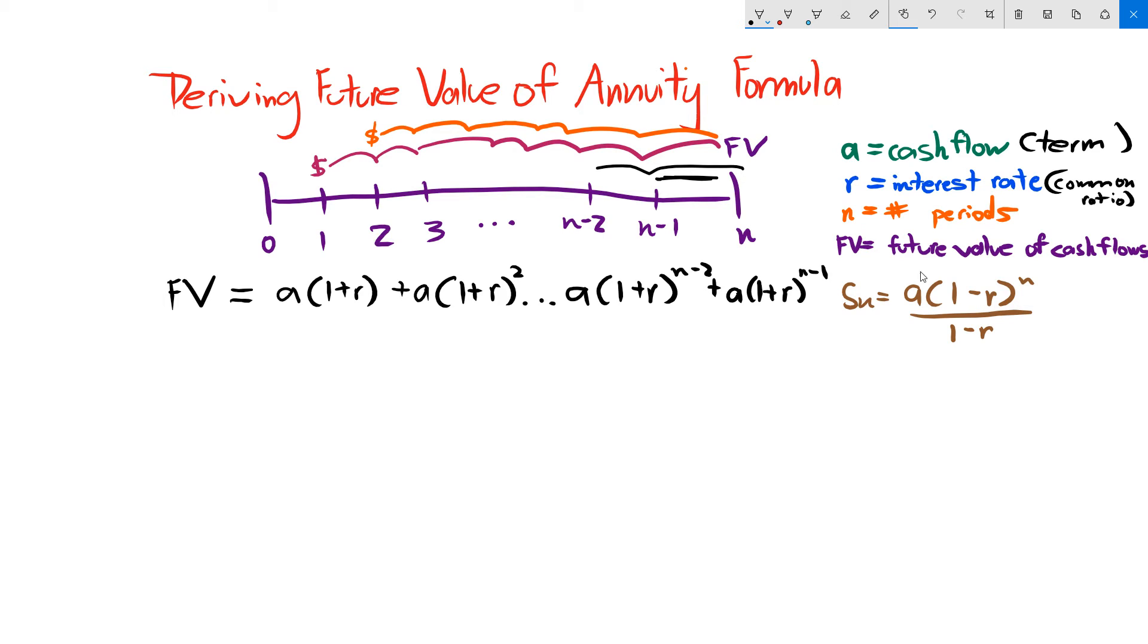But you end up with a formula like this. This is the sum of terms. This is your term. This is your common ratio. This is your number of periods. We think of finance here, and this is our cash flow, r is our interest rate, and n is our number of periods.